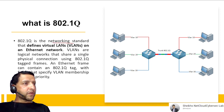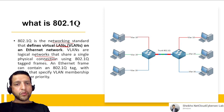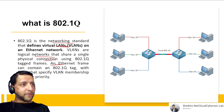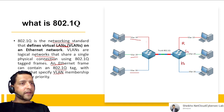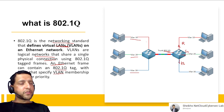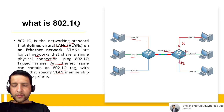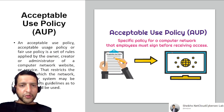802.1Q is a networking standard that defines VLANs on Ethernet networks. VLANs are logical networks sharing a single physical connection. Using 802.1Q, Ethernet frames contain a tag specifying VLAN membership and priority. For example, with VLAN 10, 20, and 30, traffic comes through a trunk and the switch reads the tag to know where each traffic — red, blue, green — should be directed.